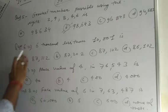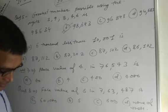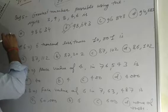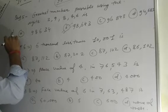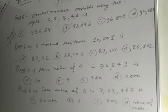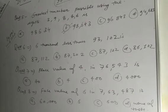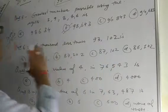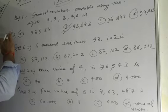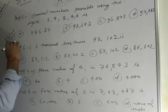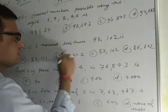Question number 6. Find 6,000 less than 93,102. We subtract 6,000 from 93,102 and get 87,102. Therefore, option B is the correct answer.